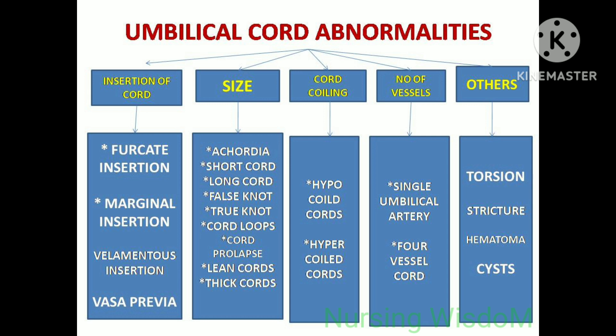Umbilical cord abnormalities can be classified as follows. According to insertion of cord: furcate insertion, marginal insertion, velamentous insertion, and vasa previa. According to size: acardia, short cord, long cord, false knot, true knot, cord loops, cord prolapse, lean cords and thick cords. According to cord coiling: hypocoiled cords and hypercoiled cords. According to number of vessels: single umbilical artery and four vessel cord. Other abnormalities include torsion, stricture, hematoma, and cyst.